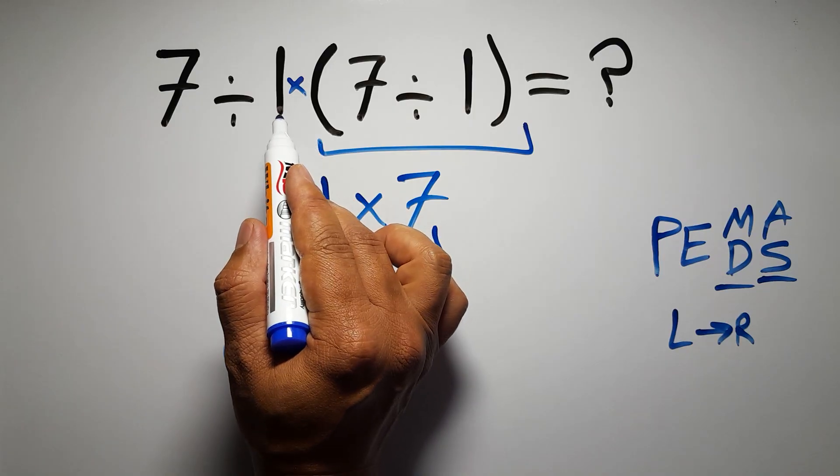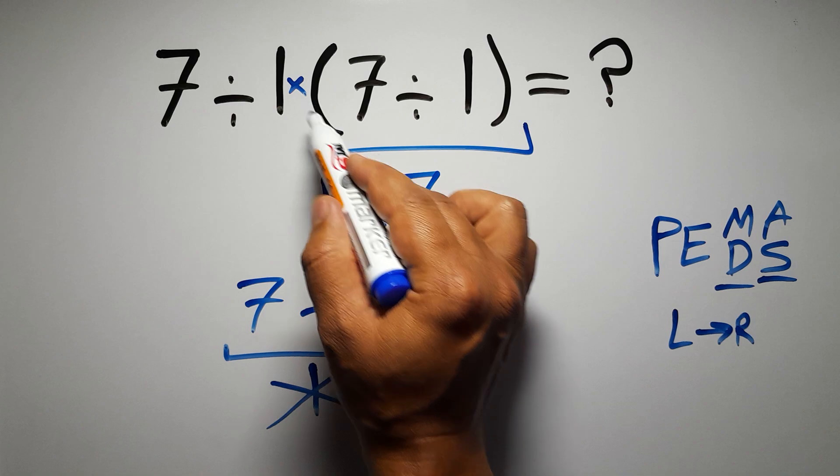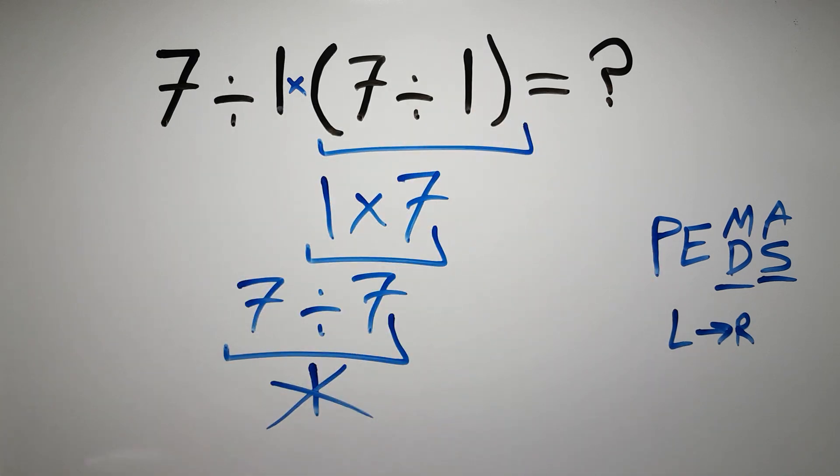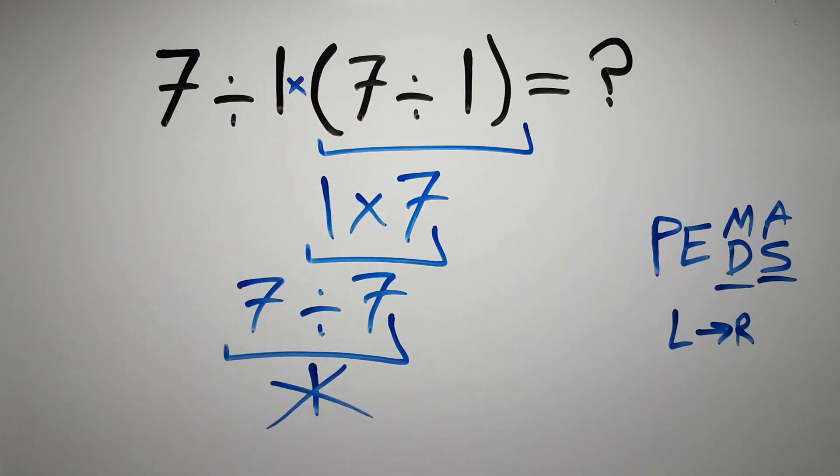So according to PEMDAS, first we have to do these parentheses, then this division, and finally this multiplication. If we do this multiplication before this division, it is wrong.